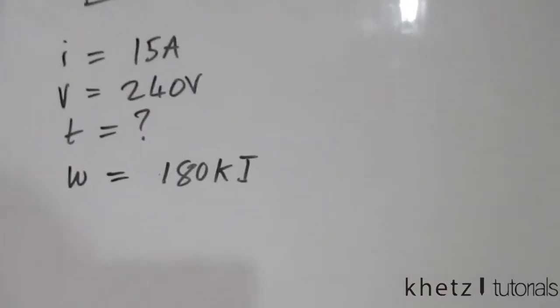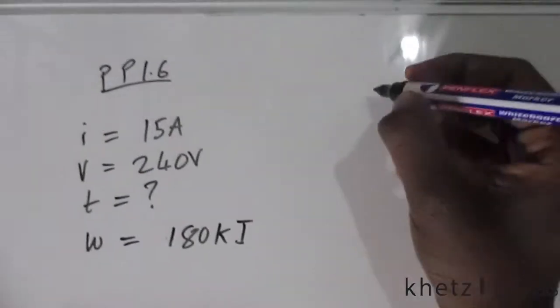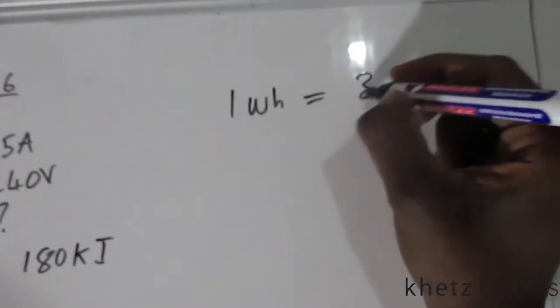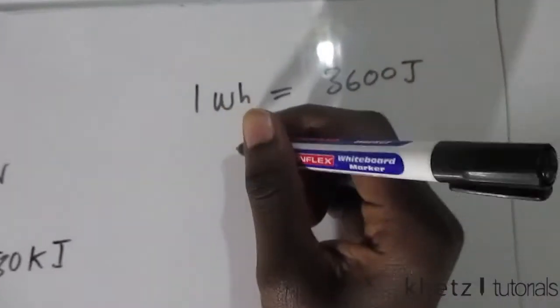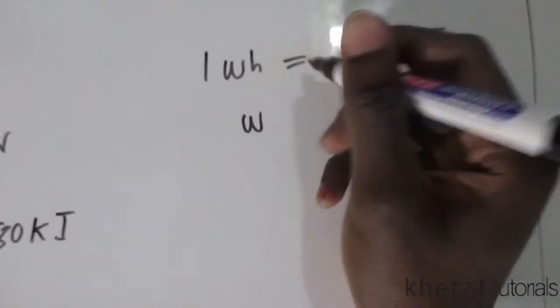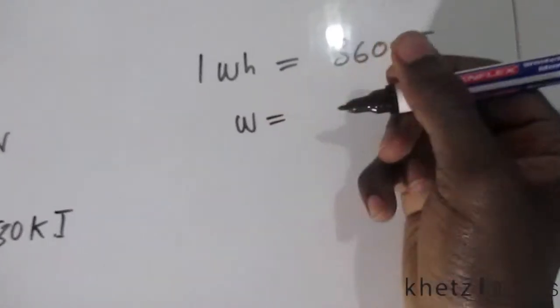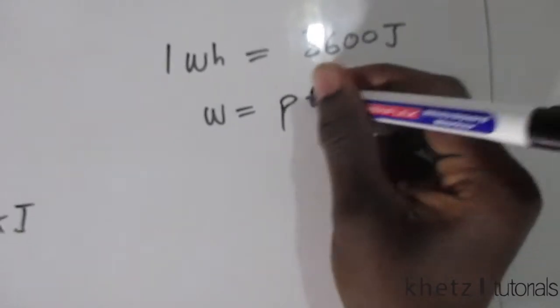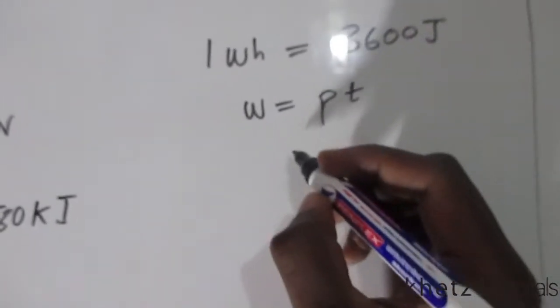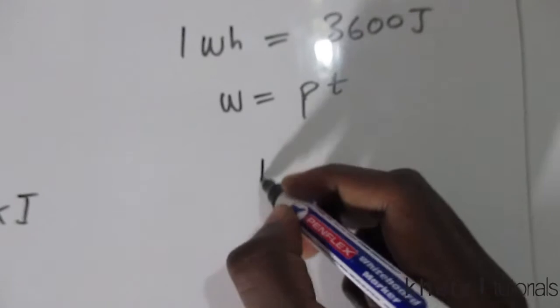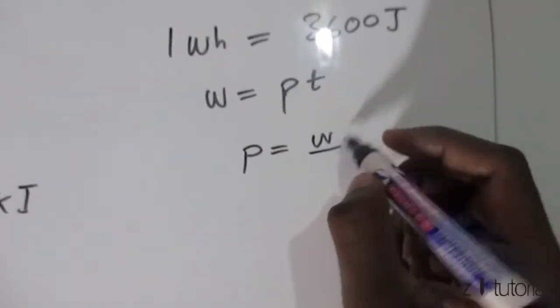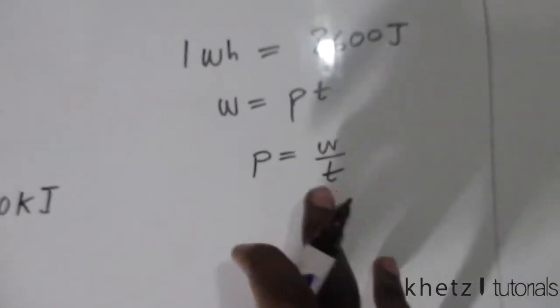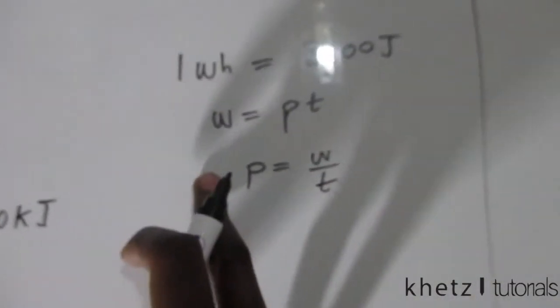So here are the formulas and conversions that we do know. One watt hour equals 3600 joules and energy equals power multiplied by time. This is simply derived from power being the time rate of change of energy. So just taking t to the other side gives us the energy.